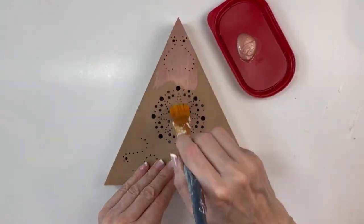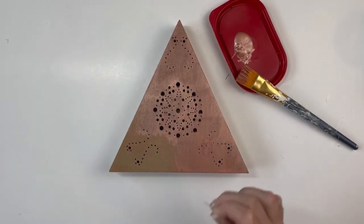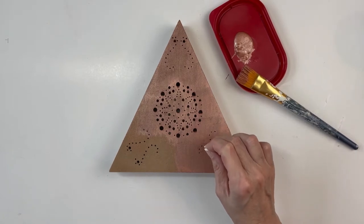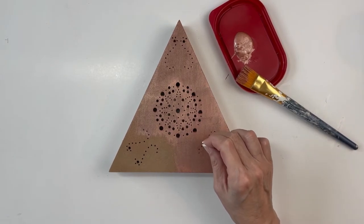As you paint, you'll see some of the smaller holes clogging up. Keep a large pin or a safety pin nearby so that you can clear those holes so that the light can still shine through.